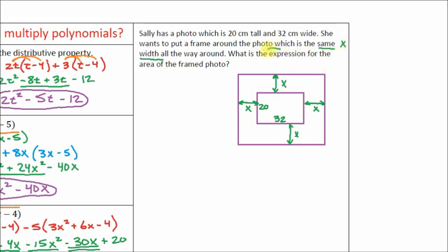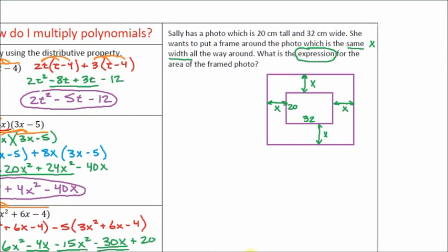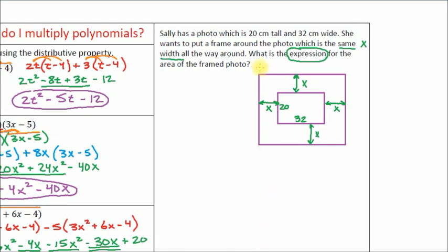What we're trying to answer now is: what is the expression? Remember, an expression doesn't have an equal sign — it's just a math sentence. We've got to find the expression that represents the area of the framed photo. When it says the area of the framed photo, that is the whole thing. If they asked us what the area of the photo is, it's just 32 times 20. But we want the whole thing — we want the photo and the frame.